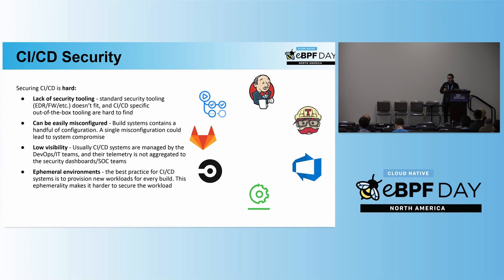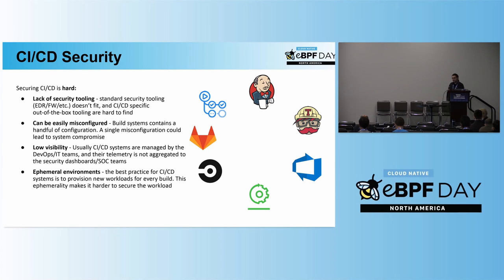Second, CI/CD systems usually have a lot of configurations — whoever has tried to play with Jenkins a bit knows what I'm talking about. Each misconfiguration could lead to potential compromise of the system. Next, because of the lack of security tooling, CI/CD systems also have really low visibility. This is another issue a security SOC team needs to handle.